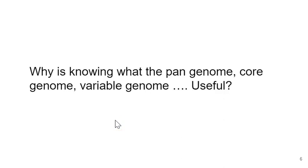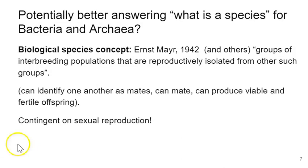So why are the concepts of pan-genome, core genome, and variable genome useful and interesting to biologists and microbiologists? One of the reasons is that there's a long-standing search for a better understanding of the word 'species' in prokaryotic organisms. When we first learn about species in biology, we learn about the various definitions, for example the biological species concept — a concept posed by Ernst Mayr and many others back in the 1940s — which states that groups of interbreeding populations that are reproductively isolated from other such groups are species.